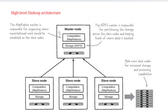Next we will see the high-level architecture of Hadoop. Basically we are having two types of nodes: the master node and the slave nodes. The master node is responsible for storing only the metadata information, and it contains MapReduce and storage components. In the slave nodes, all the actual data is stored. This follows a master-slave architecture, and we can add more slave nodes using external hard drives or commodity hardware.